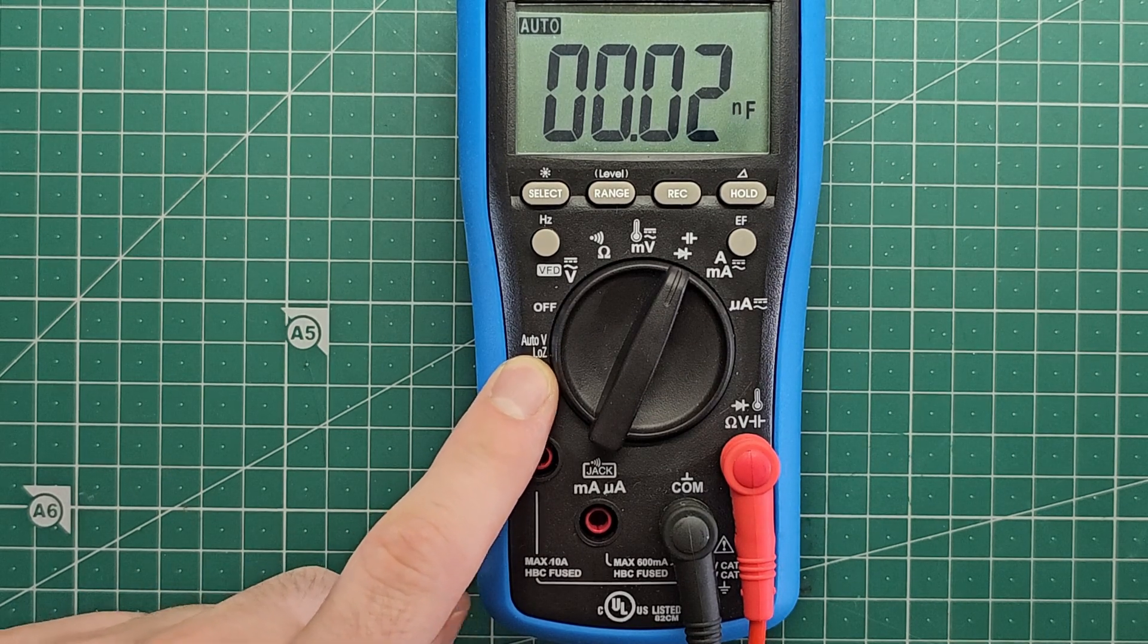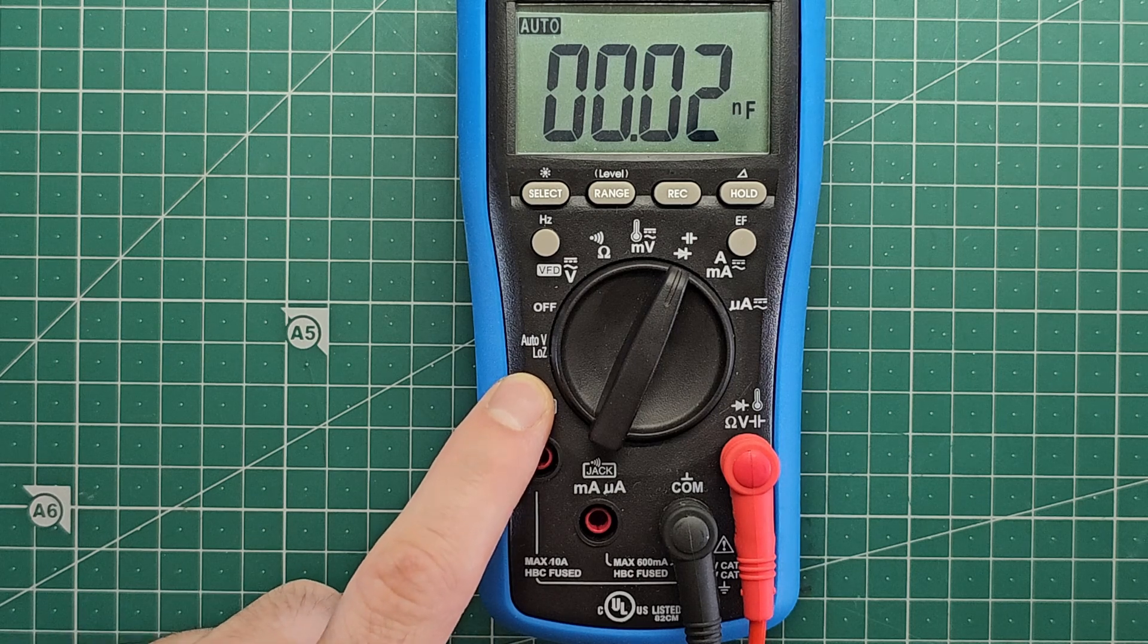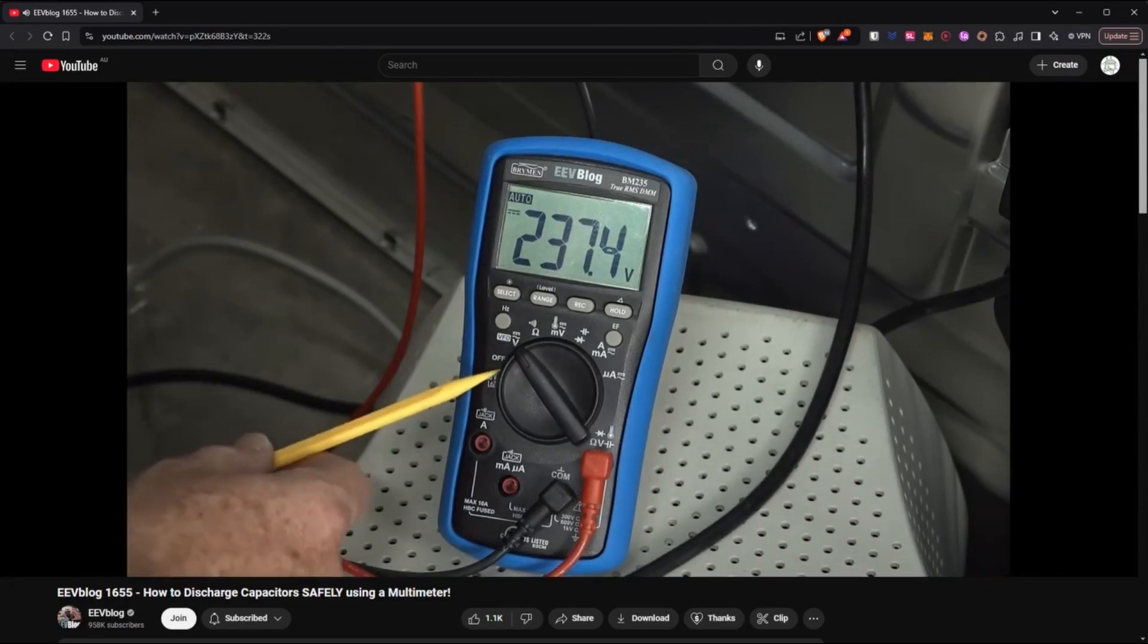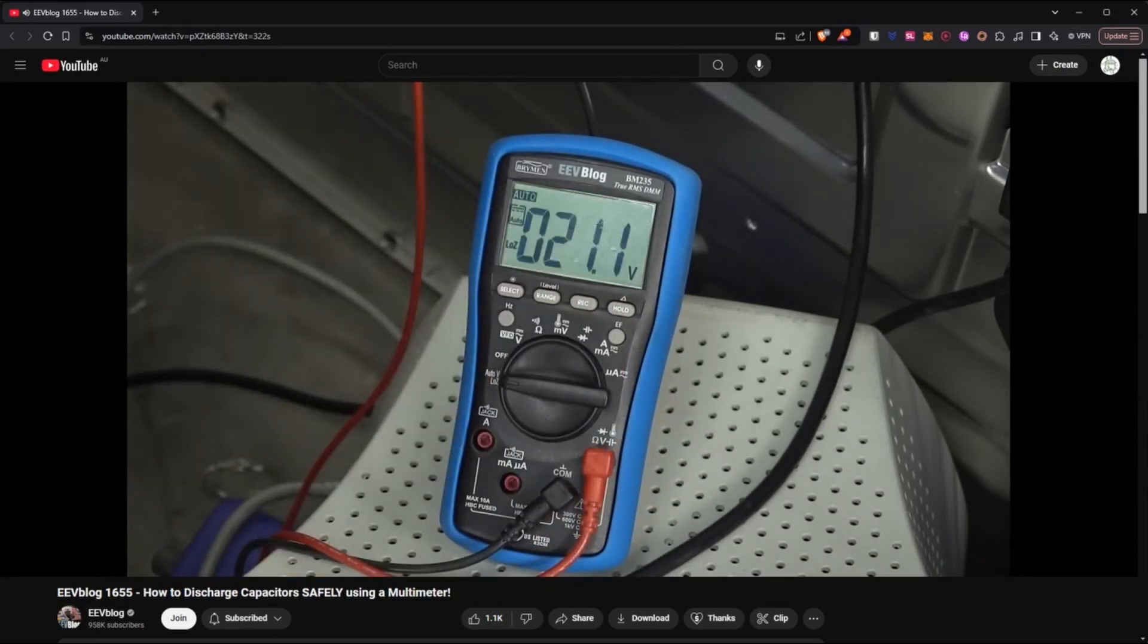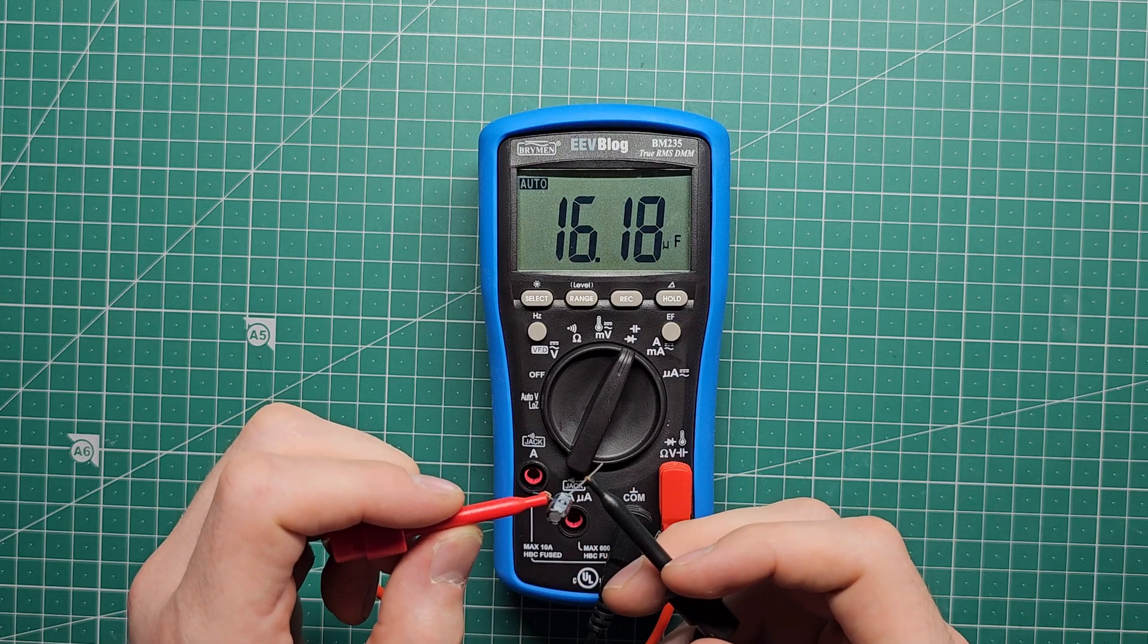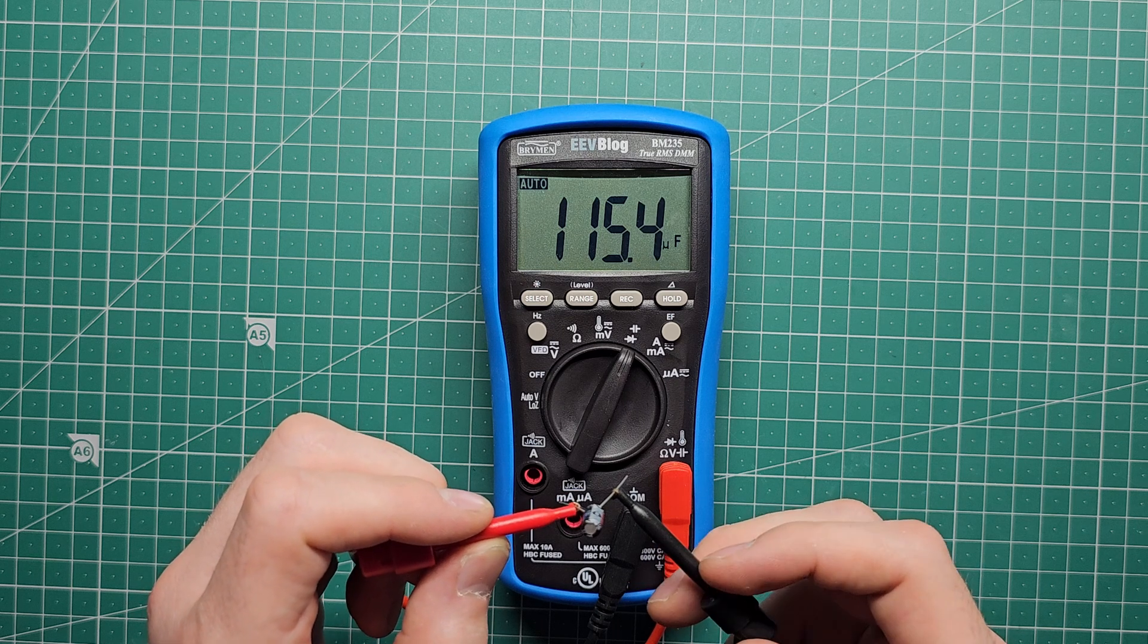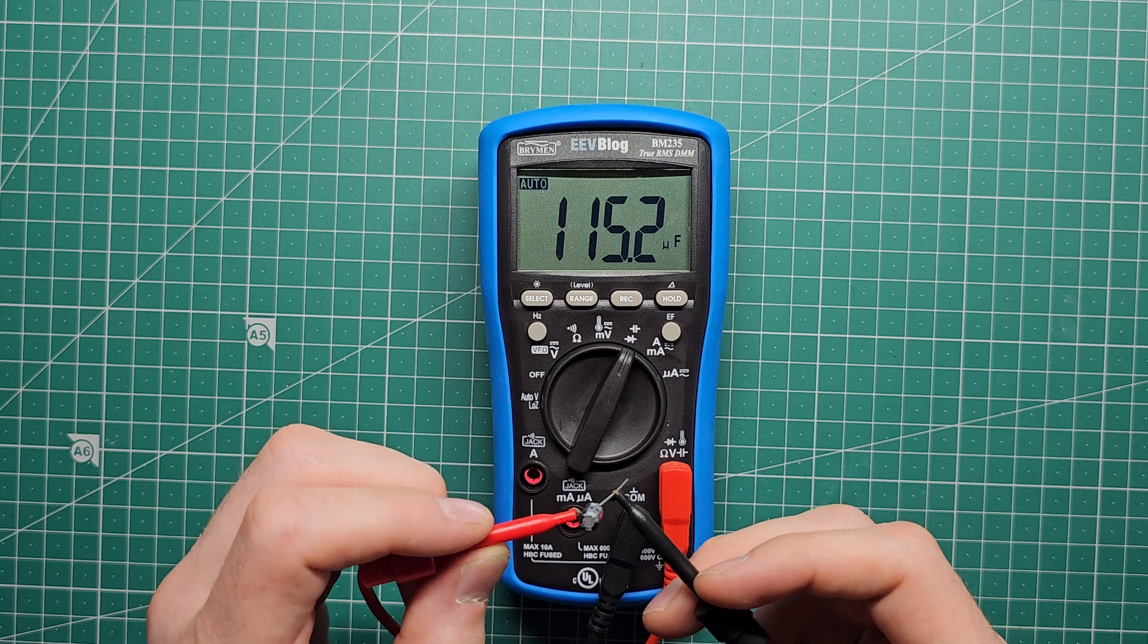On this multimeter we even have a low impedance discharge mode which is specifically for discharging capacitors like this, although not all multimeters will have that. Dave actually made a video about this on his channel explaining how this works and how to do this safely. I'll link to it in the description. Now we can plug it into the multimeter. It takes a while to stabilize because it needs some time to actually charge up the capacitor and then read the value it's charged up to, but what we see here is that this 100 microfarad is actually 115.